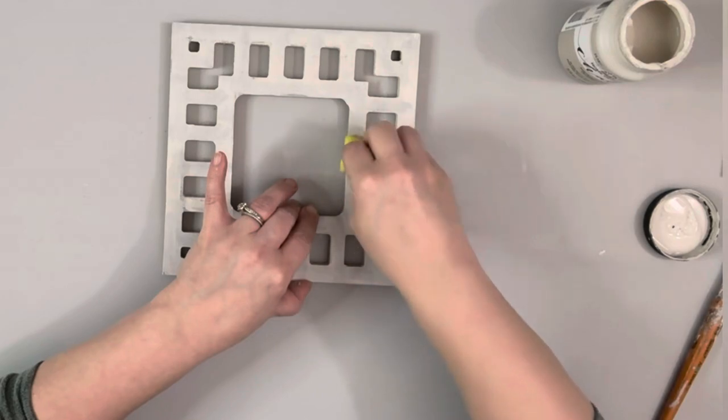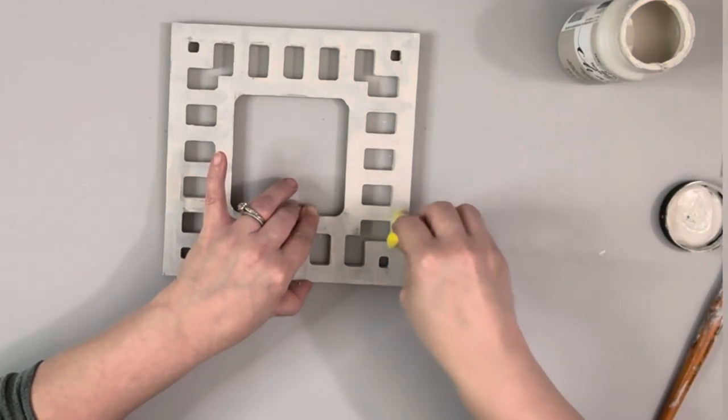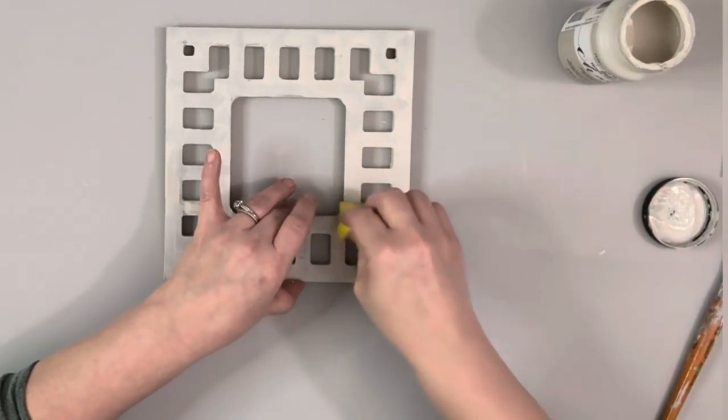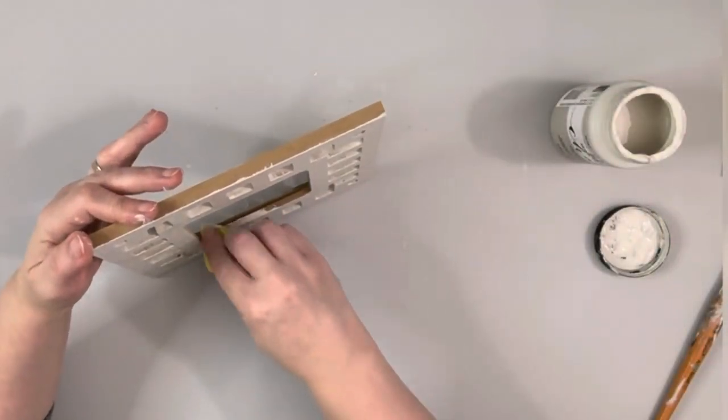For the second coat around the frame I used my craft sponge and just dabbed the paint on. It just covers a lot nicer and prevents any of those paintbrush marks.